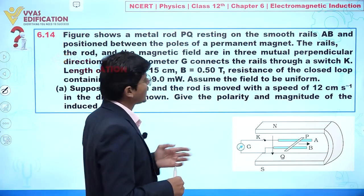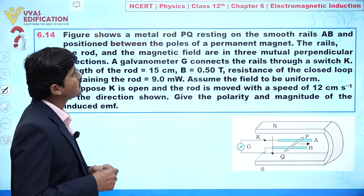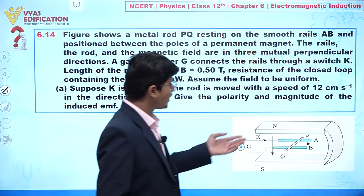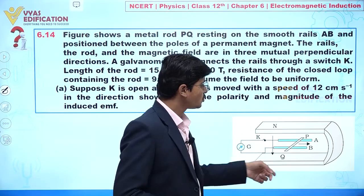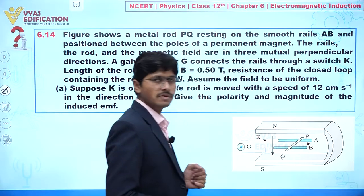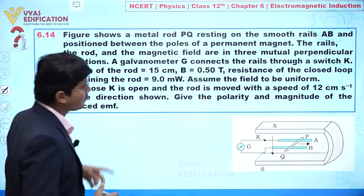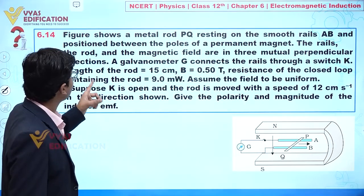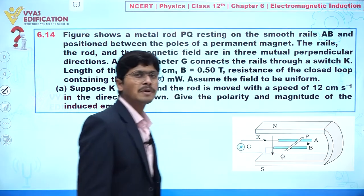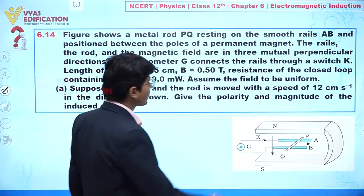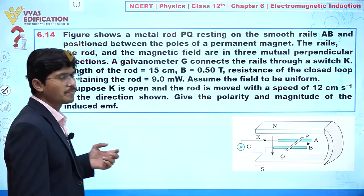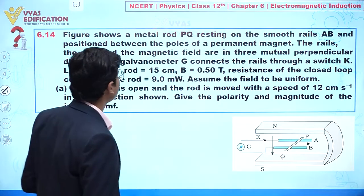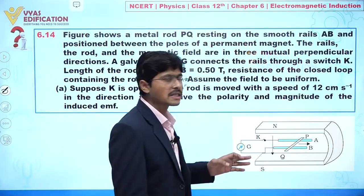The figure shows a metal rod PQ resting on smooth rails AB, positioned between the poles of a permanent magnet — a horseshoe magnet. This is the north pole and this one is the south pole. The rail AB, the rod, and the magnetic field are all mutually perpendicular. A galvanometer G connects the rail through a switch K.